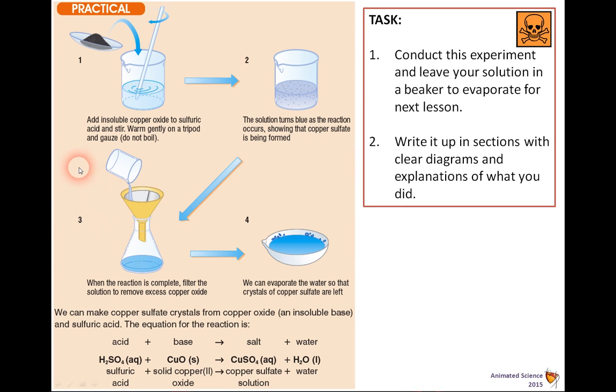The practical that you could do, or might have done in class, is to add copper oxide to sulfuric acid. You warm it gently on a tripod to help it dissolve, but don't boil it. The solution turns blue as a reaction occurs. That shows that copper sulfate is formed. Then we go to step 3, where we filter. That filtering removes the excess copper oxide.